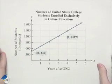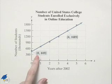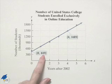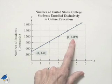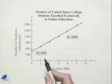Also shown is a line that passes through or near the six data points. So here's what we're looking at. Number of U.S. college students enrolled exclusively in online education. And we have, notice, a point that's designated as 0, 449, another point that's designated as 4, 1489. This is in thousands, remember, for the Y value.